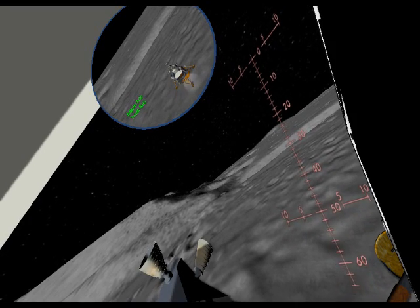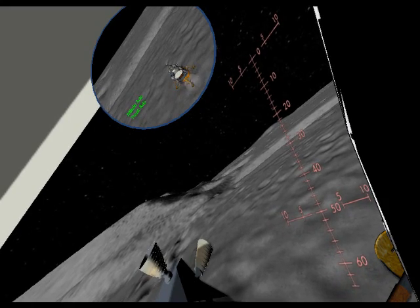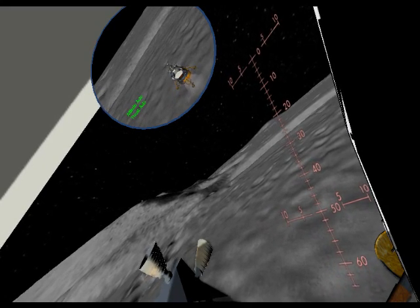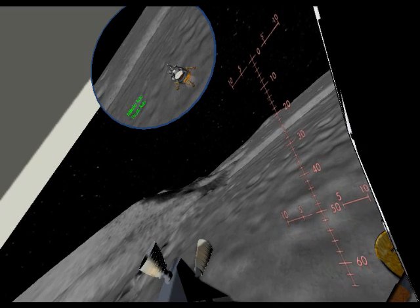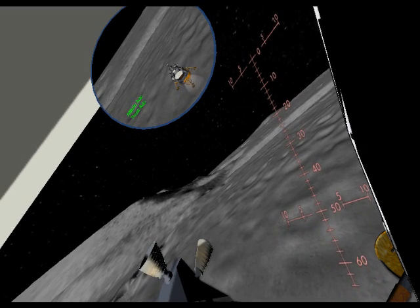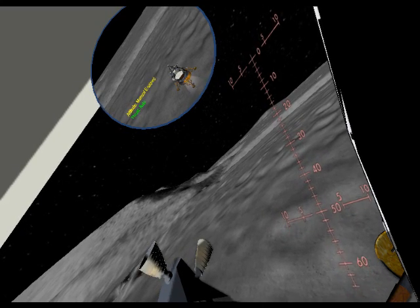The computer tells us we are heading for the area at the 40 mark on the window grid. At an altitude of 800 feet, you will be able to control the roll and pitch attitude with the joystick. At 500 feet, you will be able to adjust the descent rate with the engine throttle on the left.